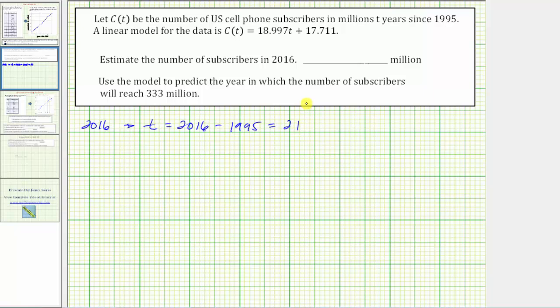To determine the number of subscribers in 2016, or to estimate the number of subscribers, we need to find the function value c(21). We'll substitute 21 for t, which would give us 18.997 times 21 plus 17.711.